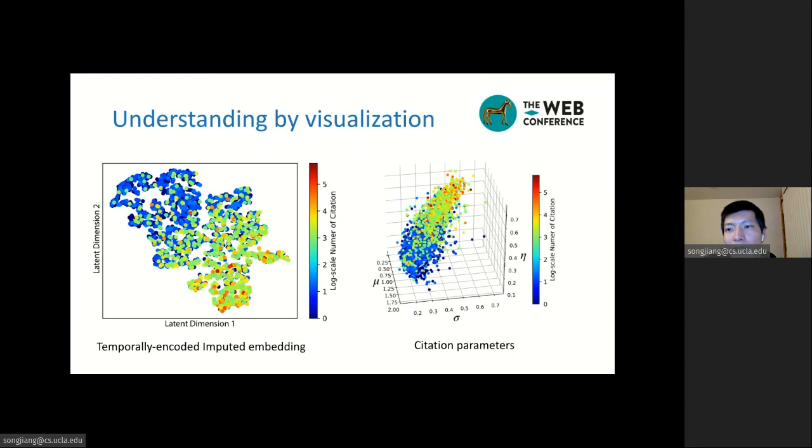To better understand how HINTS works, we also visualize the imputed embedding and the three citation parameters learned by our model. In this figure, a brighter color point is a paper with high citation after five years. We can see that our model can distinguish the high-impact papers. This is also an interpretation of our model.